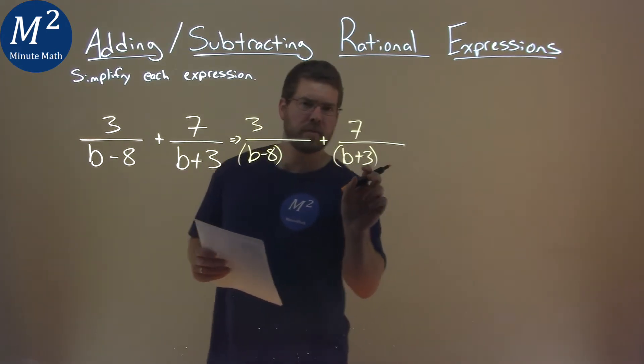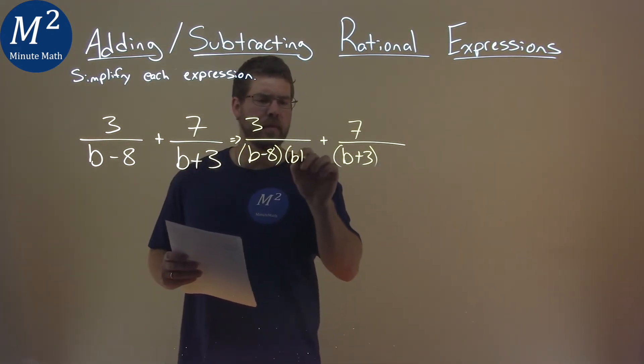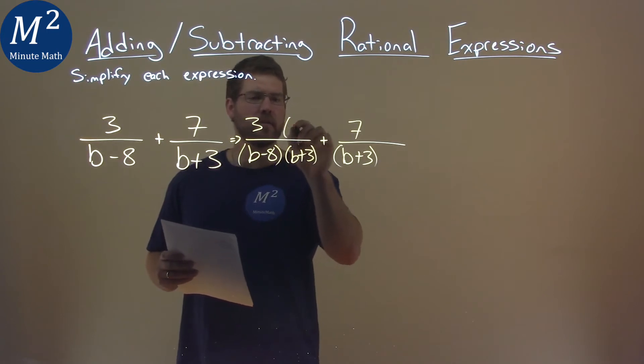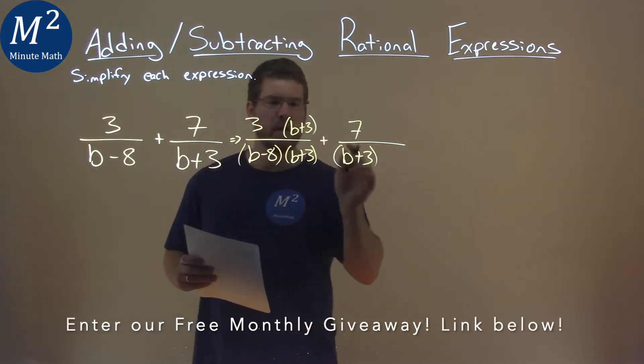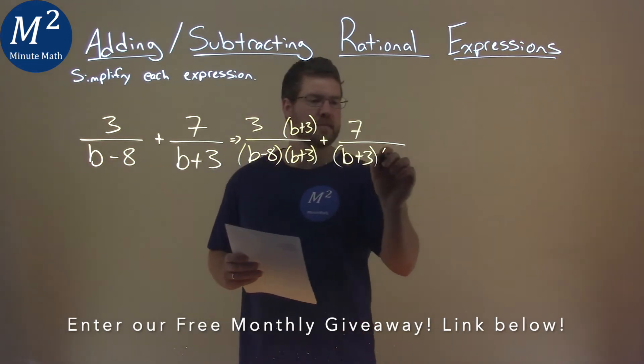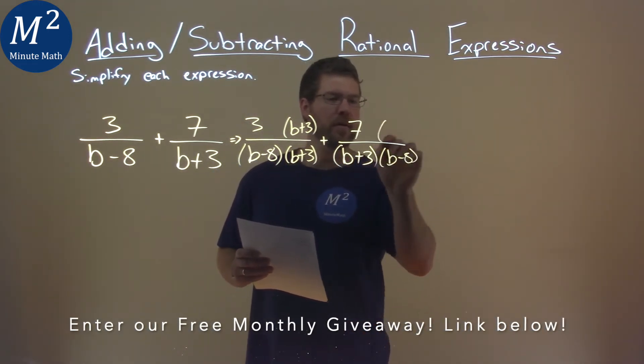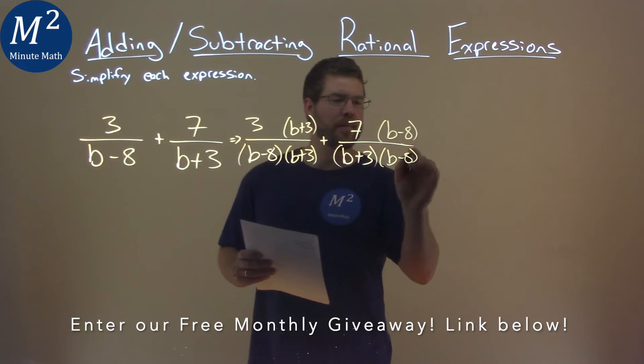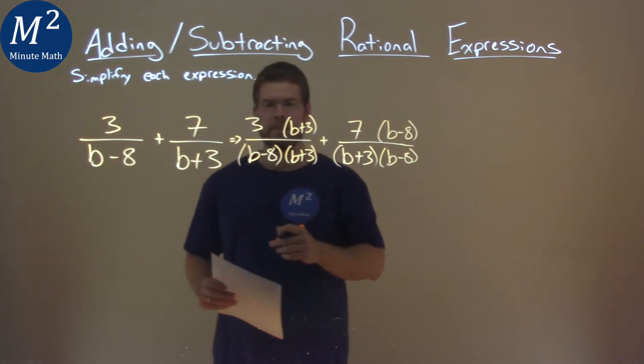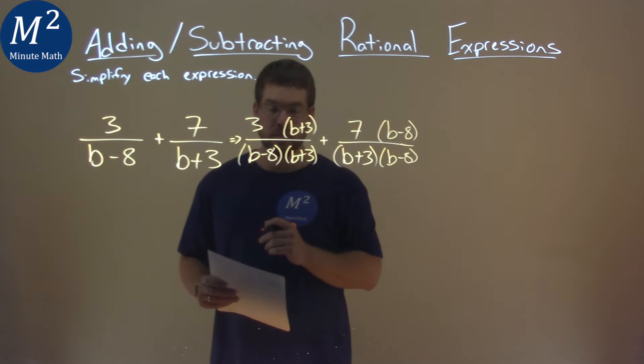I take this denominator, b plus 3, and I'm gonna put it on this left fraction over itself. This denominator, b minus 8, same thing. b minus 8 here, and b minus 8, we're multiplying that out. We now have the same denominator: b minus 8 times b plus 3.